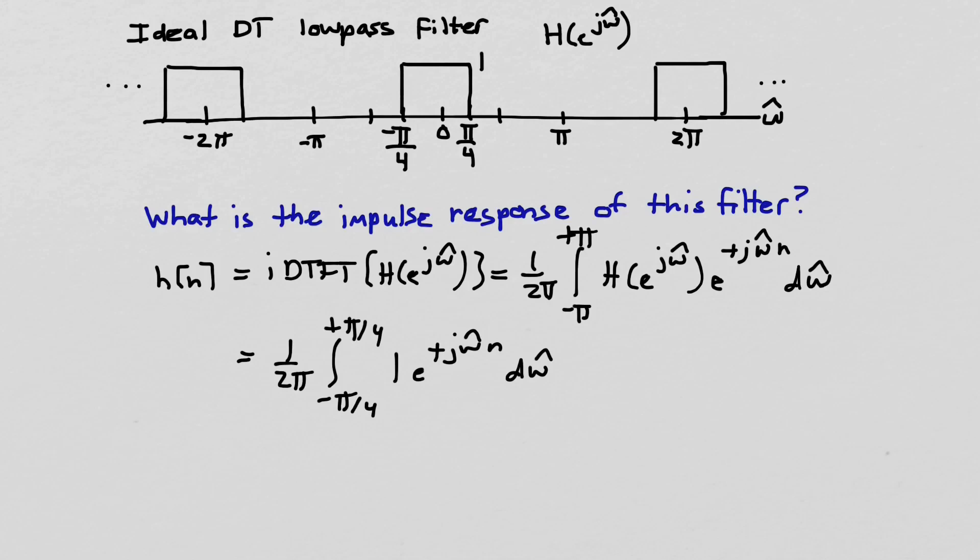That's an easy integral to perform because we know that the integral of a complex exponential is just that same complex exponential. So we can write this as 1 over 2π times 1 over jn. The reason we have to have that is that j and n here are basically constants with respect to ω, and so we need those to divide by those to get the integral right. And then e^(+jω̂n) is the integral, and then we evaluate that between -π/4 and +π/4, which are the limits.